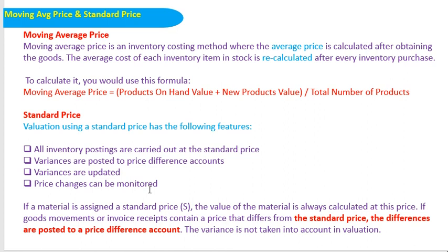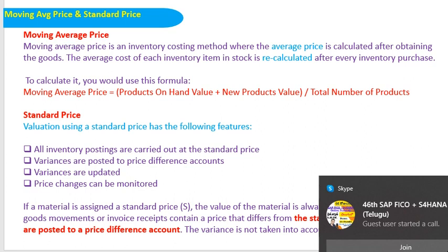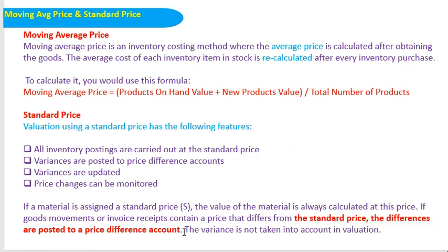Whatever demand difference exists — between the purchase order, goods receipt, and invoice — if you maintain standard price in the material master, and the material master price is 100 rupees while the purchase price is 110 rupees, then the difference amount goes to the price difference account. In the case of moving average price, the difference amount is included in stock. If material is assigned to standard price, the value of material is always calculated at that price; any difference from the standard price is posted to the price difference account and is not taken into account in valuation.